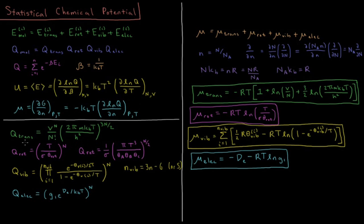We derived these molecular partition functions for a system of N independent molecules for translations, rotations, vibrations, and electronic degrees of freedom. For translations, it was volume to the N over N factorial, where N is the number of particles, times (2πmkT/h²) to the 3N/2, where m is the mass of an individual molecule and h is Planck's constant.